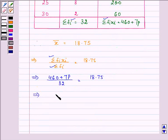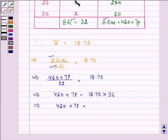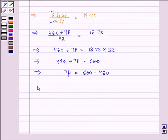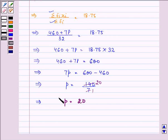That further gives us 460 plus 7P is equal to 18.75 into 32. The product comes out to be 600. So this implies 7P equals 600 minus 460. We have the value of P as 140 divided by 7, which gives us P equals 20.